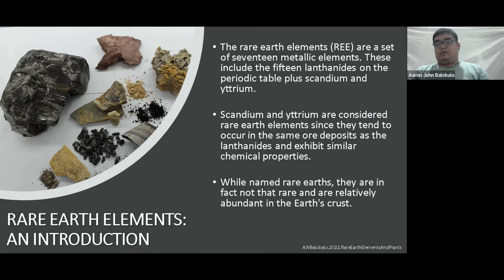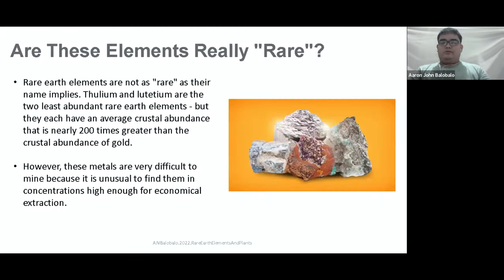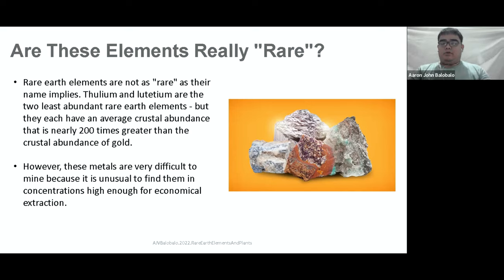So we can see as we go on in the presentation that it is not rare at all — like lanthanum and cerium. Are these elements really rare? Rare earth elements are not as rare as their name implies. Thulium and lutetium are the two least abundant rare earth elements, but they each have an average crustal abundance that is nearly 200 times greater than the crustal abundance of gold. So it's not rare at all.